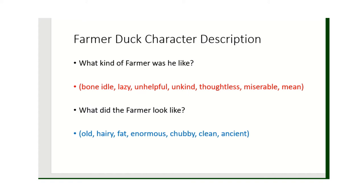What did the farmer look like? He was old, wasn't he? 'Ancient' is another word for old. He was quite hairy on his face and his chest, although he was quite clean. But he was fat, wasn't he? That was one of the things said in the book. He was enormous — that's a synonym for fat. He was chubby as well.